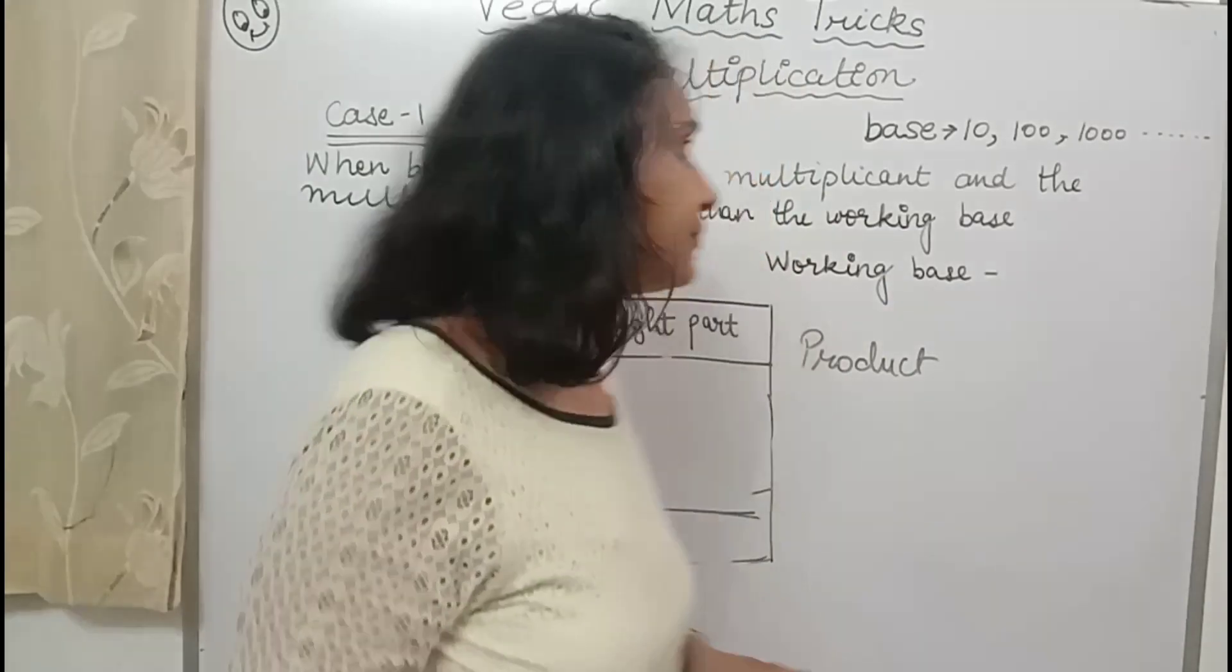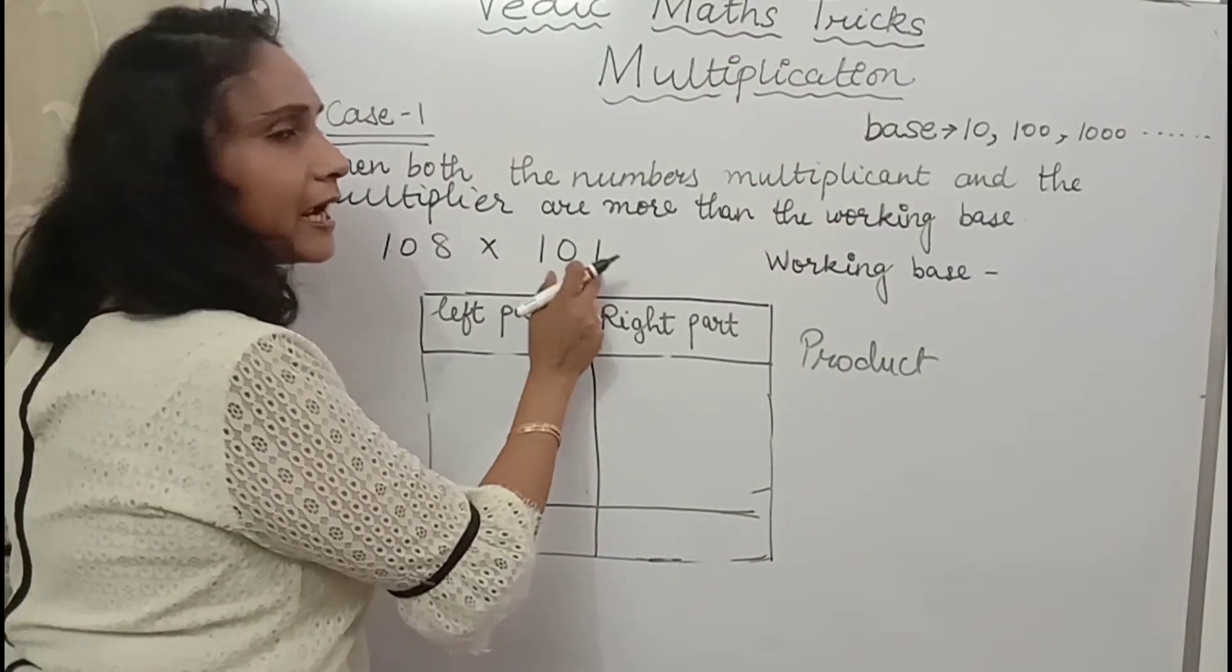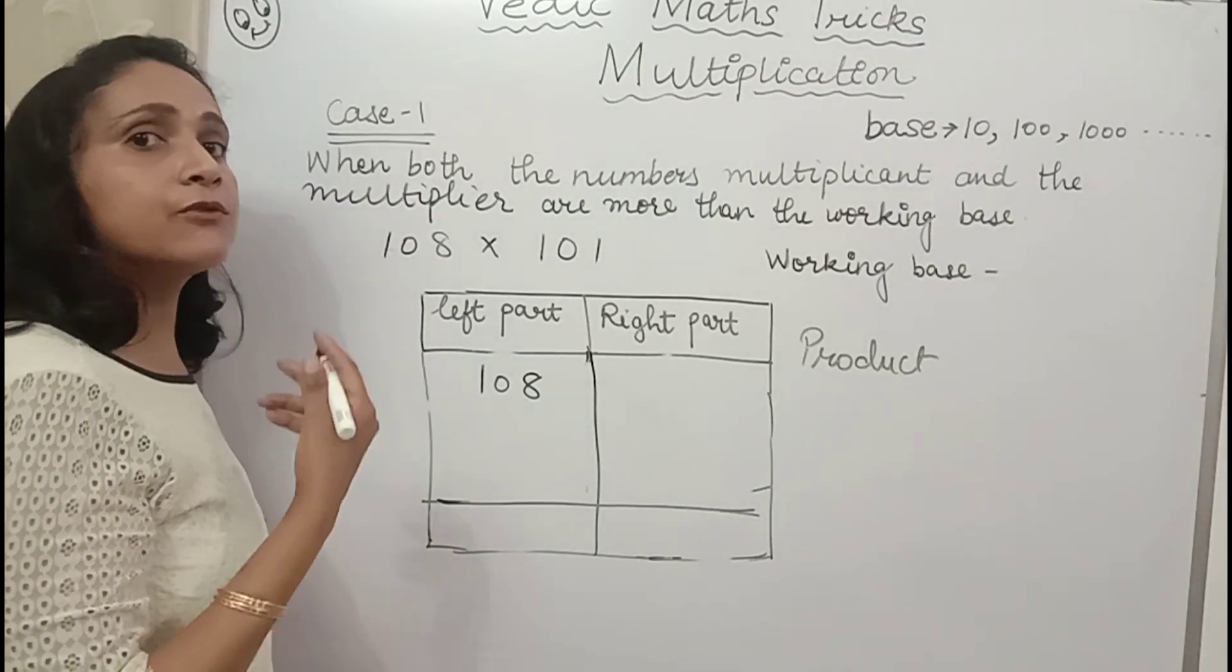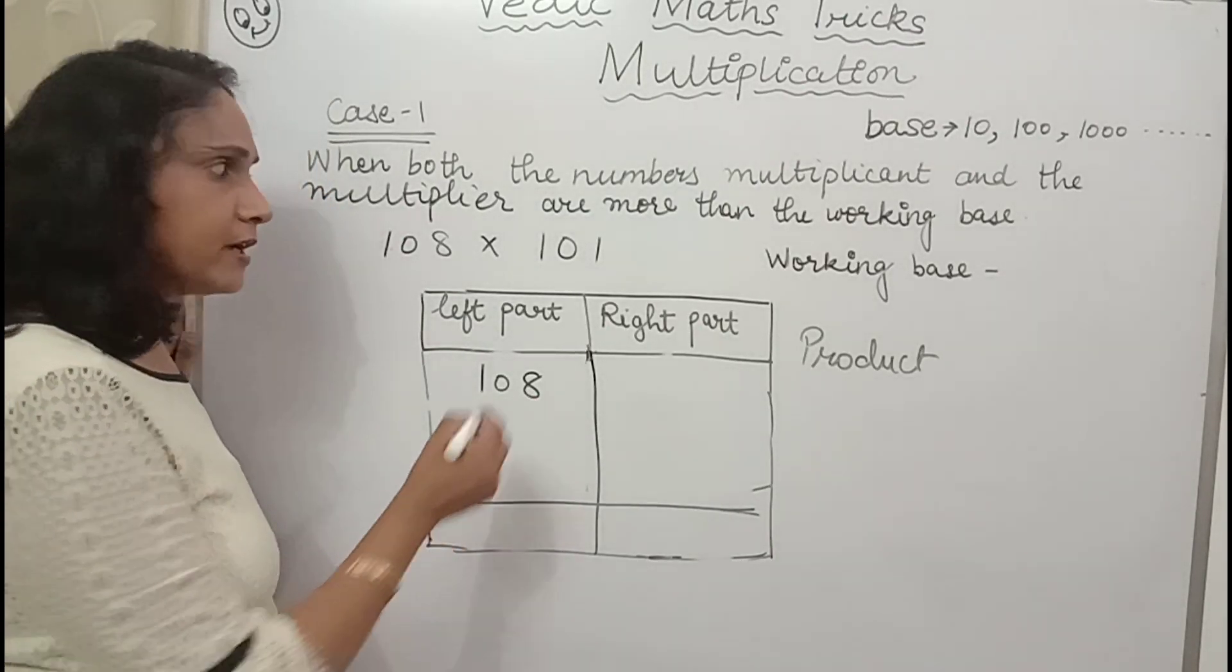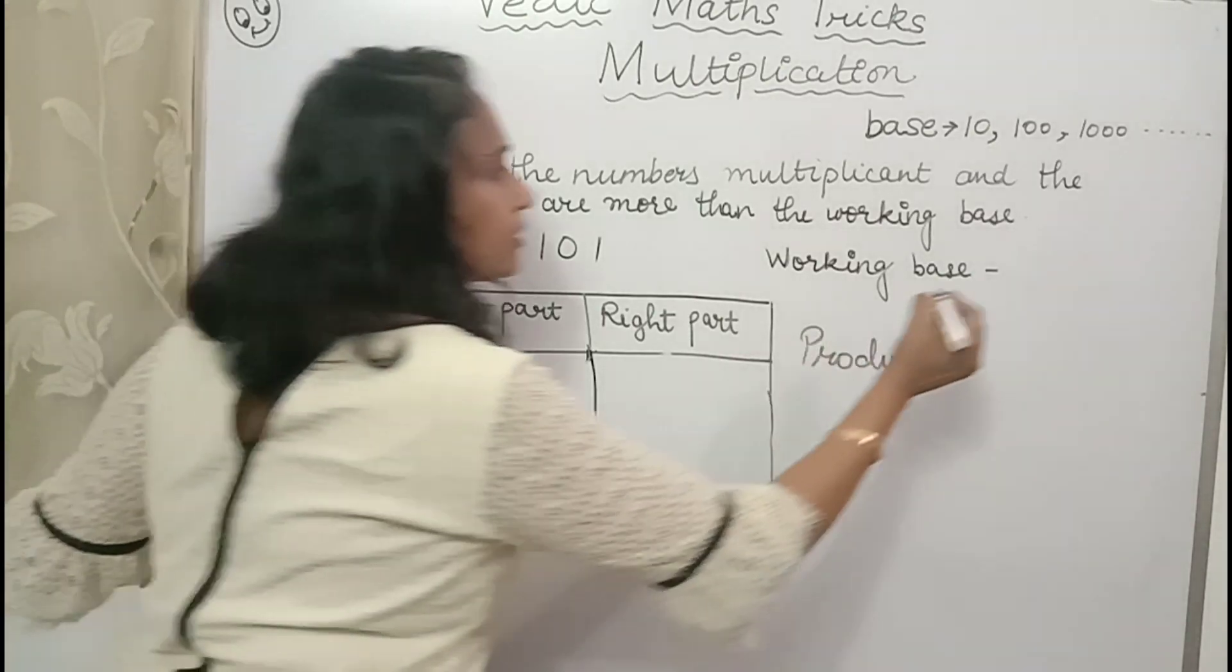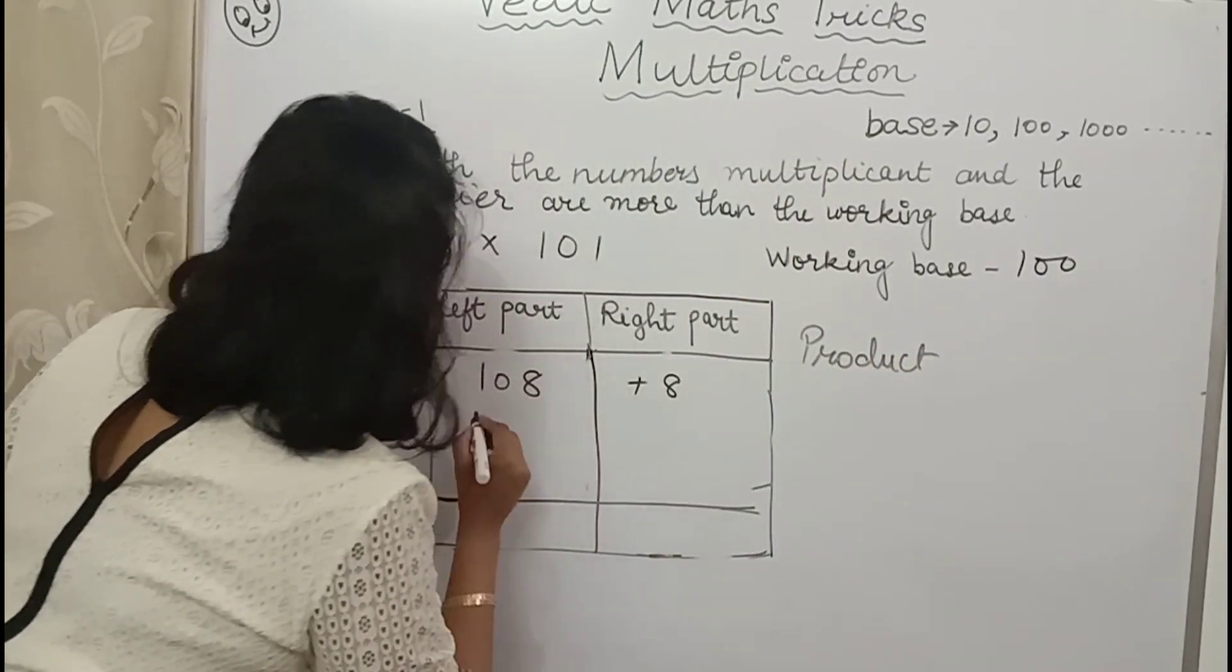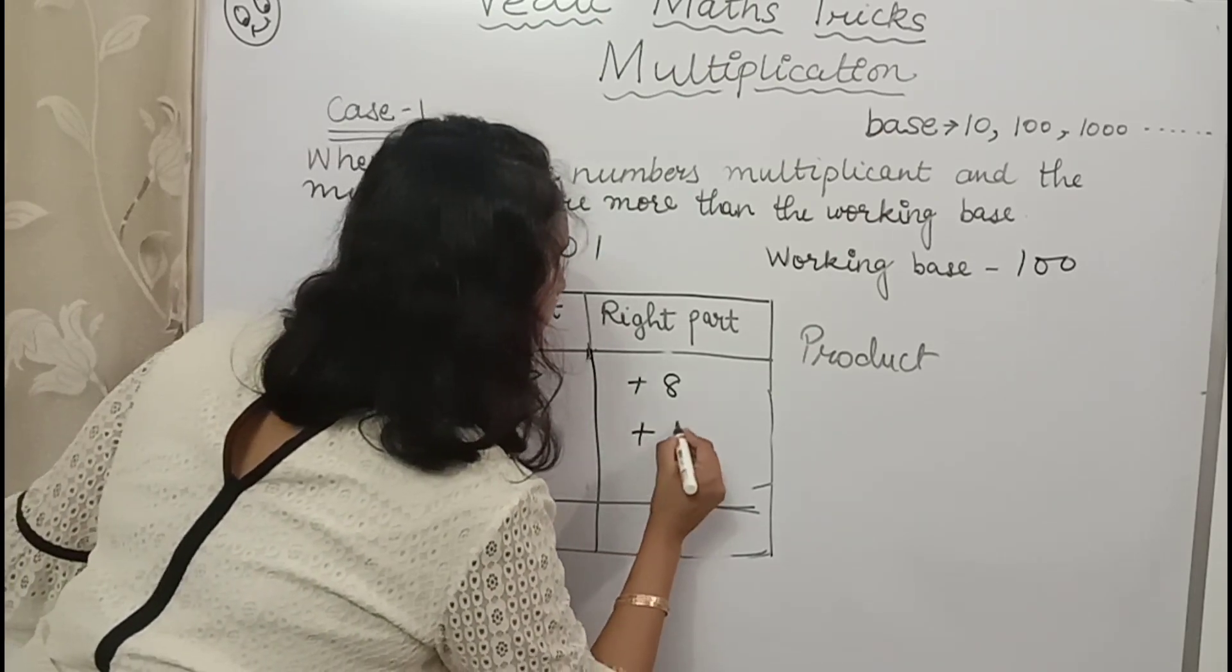108 multiplied by 101. 108. First of all, what is my working base here? This number is closer to 100. 101 is closer to 100. So my working base is 100. Now what is surplus? 8. 101. What is surplus? 1.